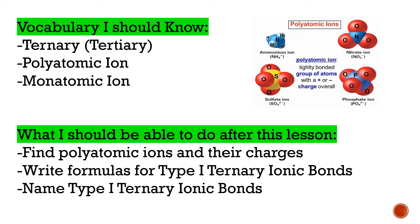There are some pictures here of polyatomic ions. Basically, these are ions where the whole thing has a charge, but it's made up of more than one atom. We've been looking at ions made up of only one type of element, like lithium with a 1+ charge or magnesium with a 2+ charge. These instead have more than one type of element in them, but the entire ion has a charge.